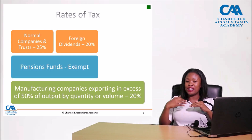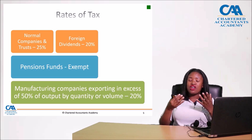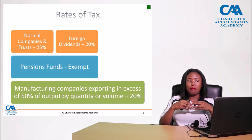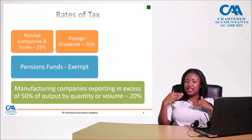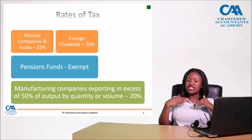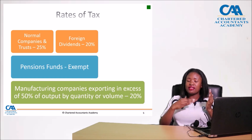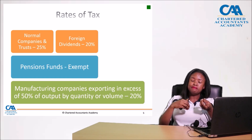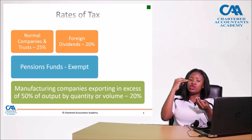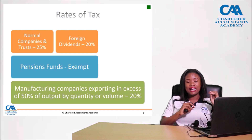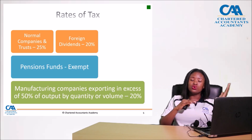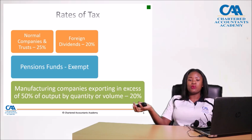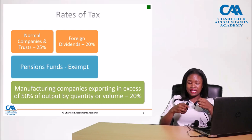There are things which are not from a source within Zimbabwe but are deemed to be from a source within Zimbabwe as per Section 12. So if a resident earns dividends from, for example, a South African company or a United States company, these dividends should be taxed in Zimbabwe at a different rate of 20 percent. You tax the rest of income at 25 percent and foreign dividends at 20 percent to get the total taxable income.